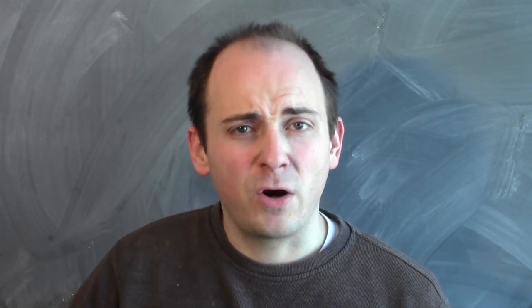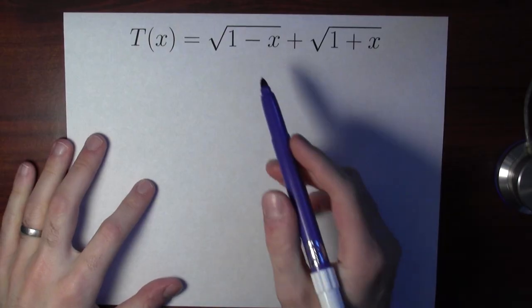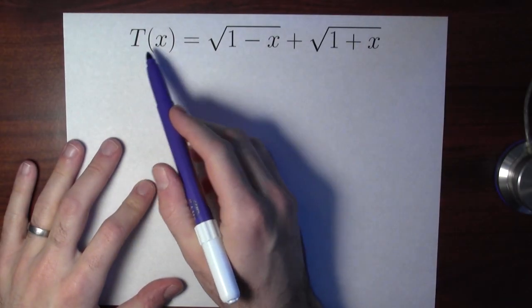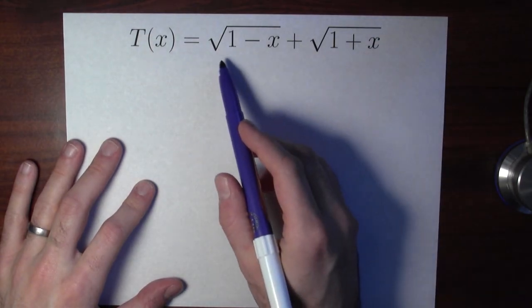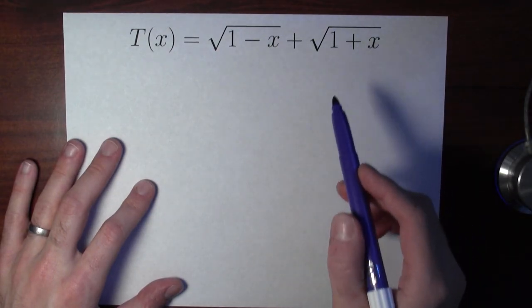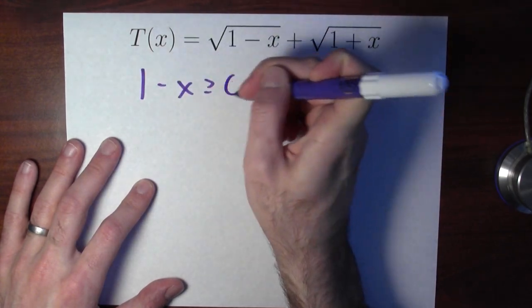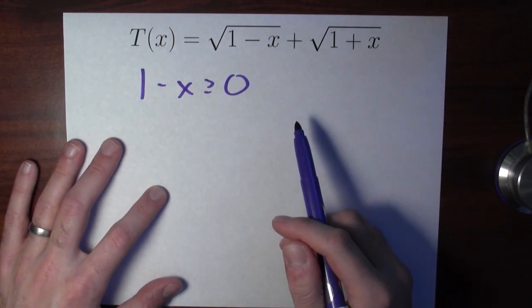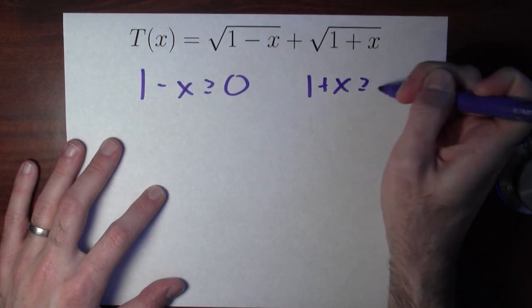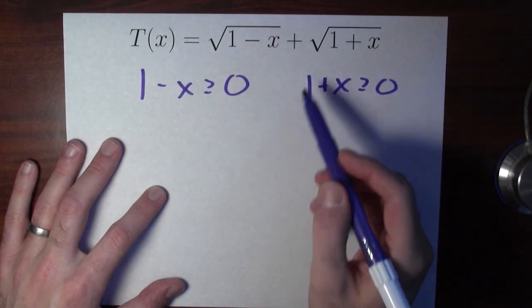Let's do an even harder example where I've got multiple square roots — the square root of something plus the square root of something. Let's figure out the domain of the function t of x equals the square root of 1 minus x plus the square root of 1 plus x. In order for this rule to make sense, I have to be able to take both square roots. In order to do this first square root, I'm going to need that 1 minus x is bigger than or equal to 0. In order to take this second square root, I need 1 plus x to be bigger than or equal to 0. Both of these things have to be true.